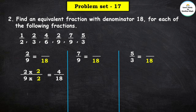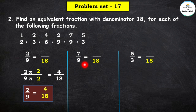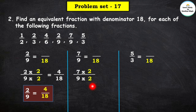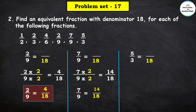So here the equivalent fraction of 2 upon 9 is 4 upon 18. Next fraction is 7 upon 9. We multiply by 2: 7 × 2 = 14 and 9 × 2 = 18. So here the equivalent fraction of 7 upon 9 is 14 upon 18.